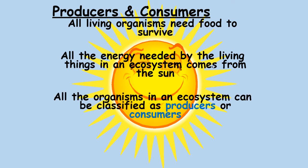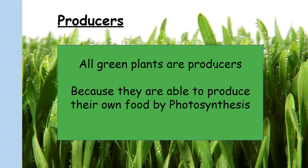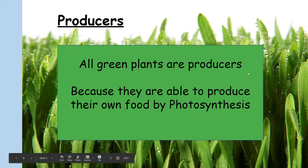Organisms in the ecosystem can be classed as either producers or consumers. Producers are green plants, and they produce their own food using photosynthesis. Until about 20 years ago, scientists thought photosynthesis was the only way energy could enter a food chain. However, at the bottom of the deepest part of the sea, they found an exception called chemosynthesis, where organisms take high-energy particles from hydrothermal vents to start a food chain. Apart from that small exception, all energy in the world comes from the sun.